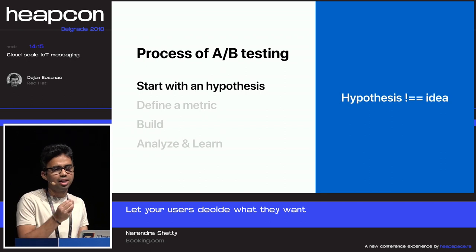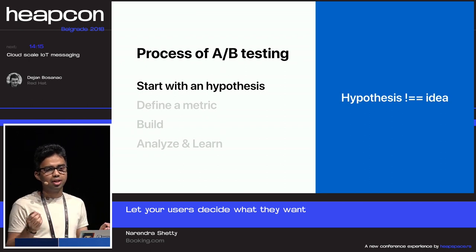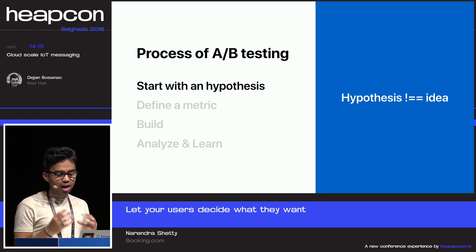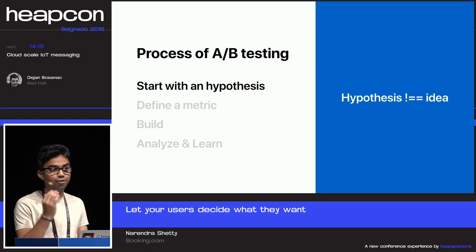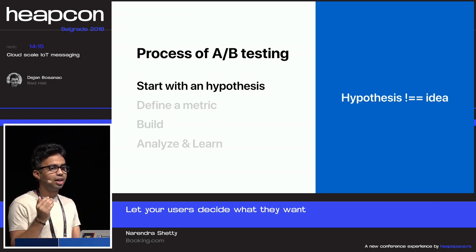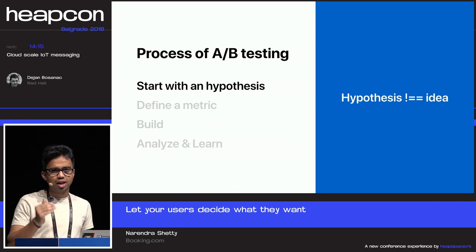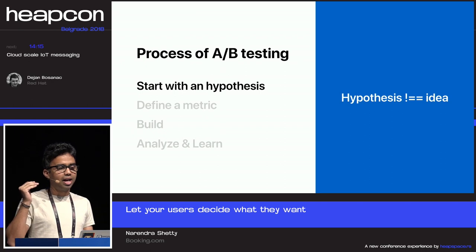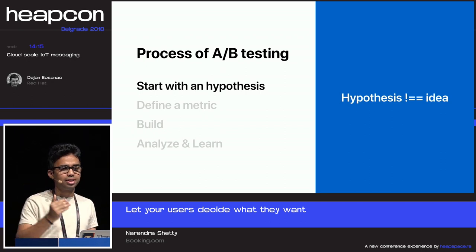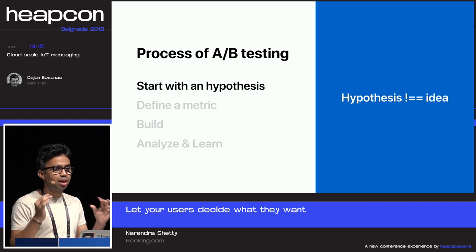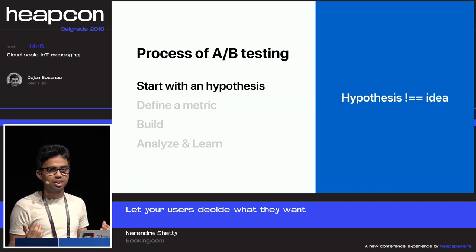You need to have a strong hypothesis every time before you start an experiment — something like: I'm doing a certain change, I'm expecting to improve certain things for users, and I expect certain metrics to increase or decrease. That's your entire hypothesis, and it's very important to have that before you start any experiment.